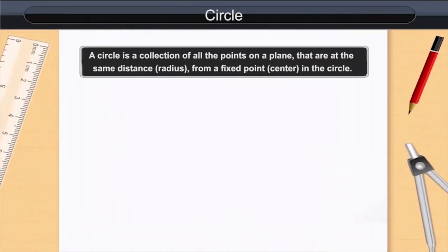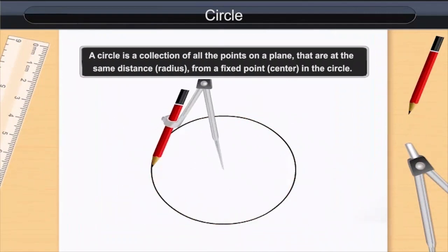Circle. A circle is a collection of all the points on a plane that are at the same distance, radius, from a fixed point, center, in the circle.